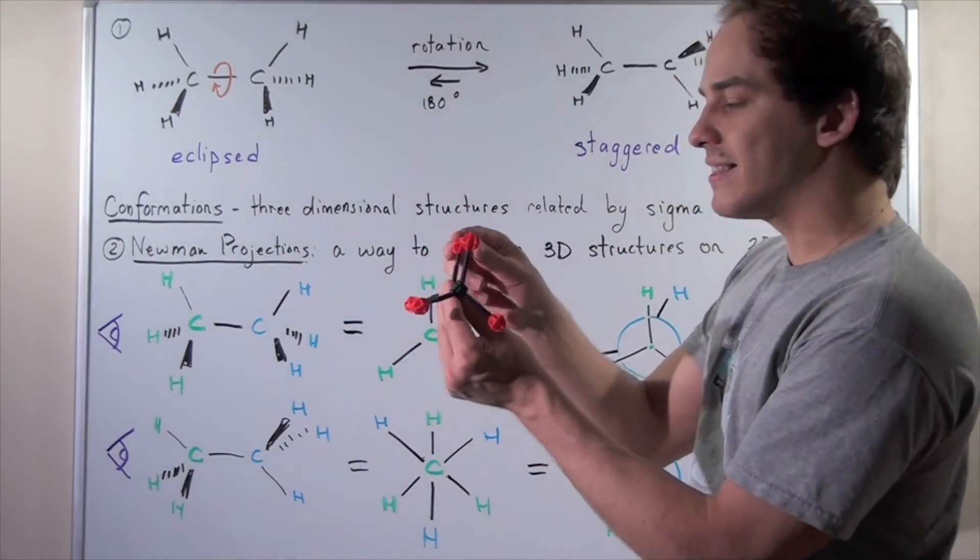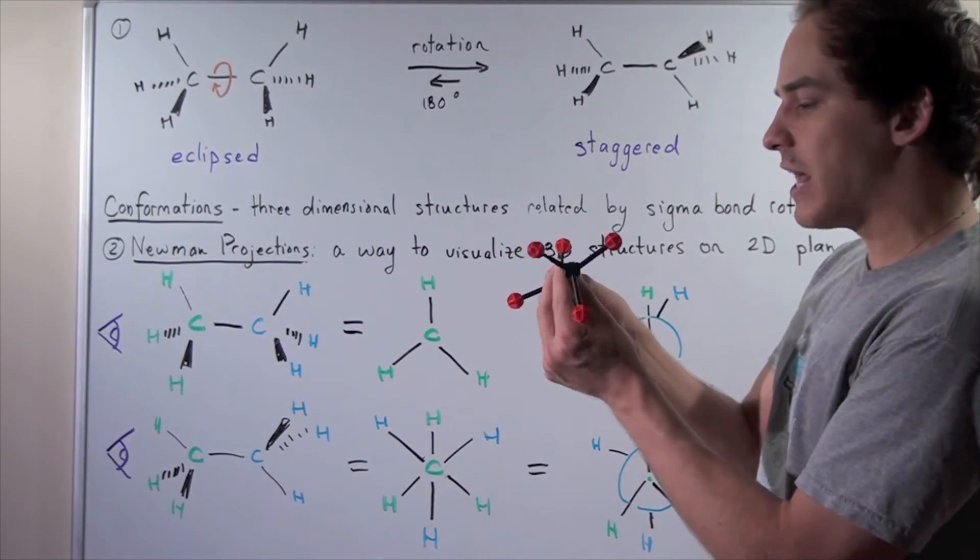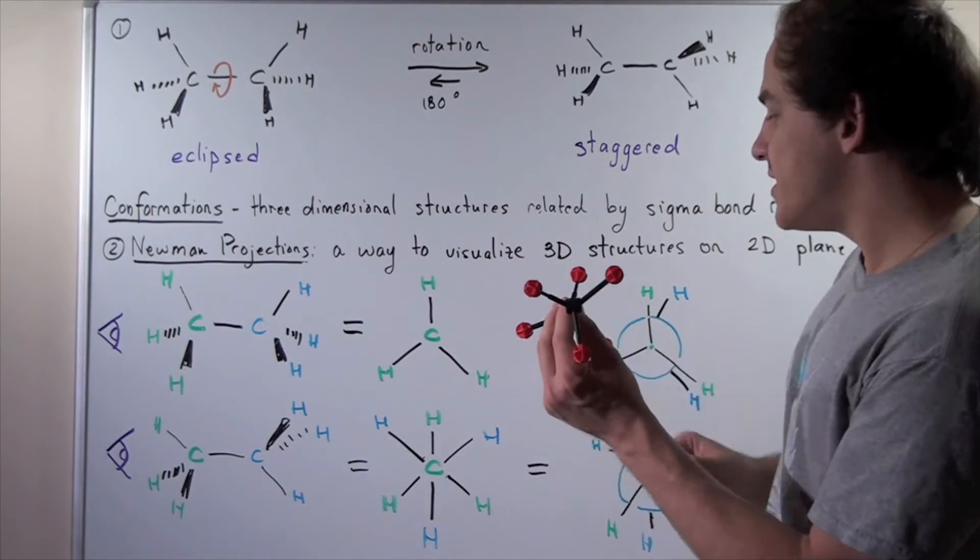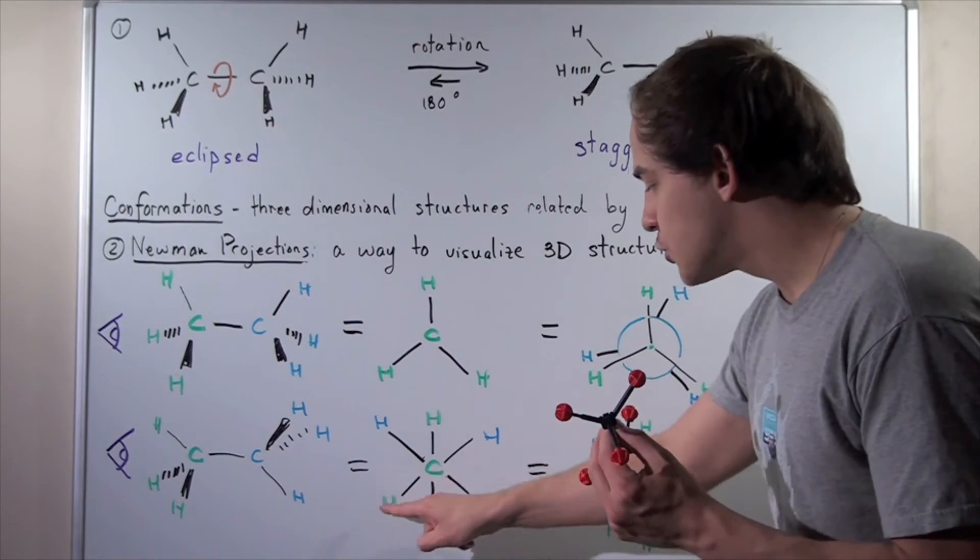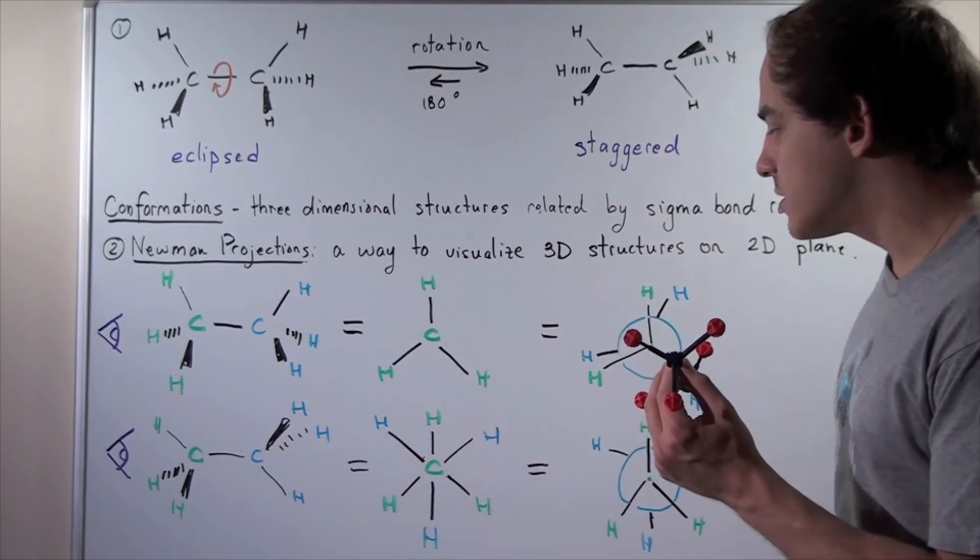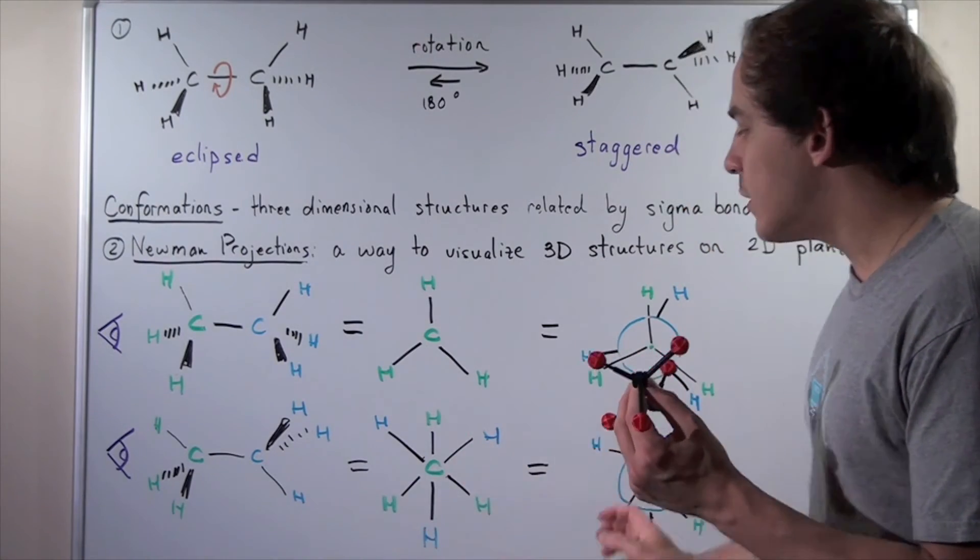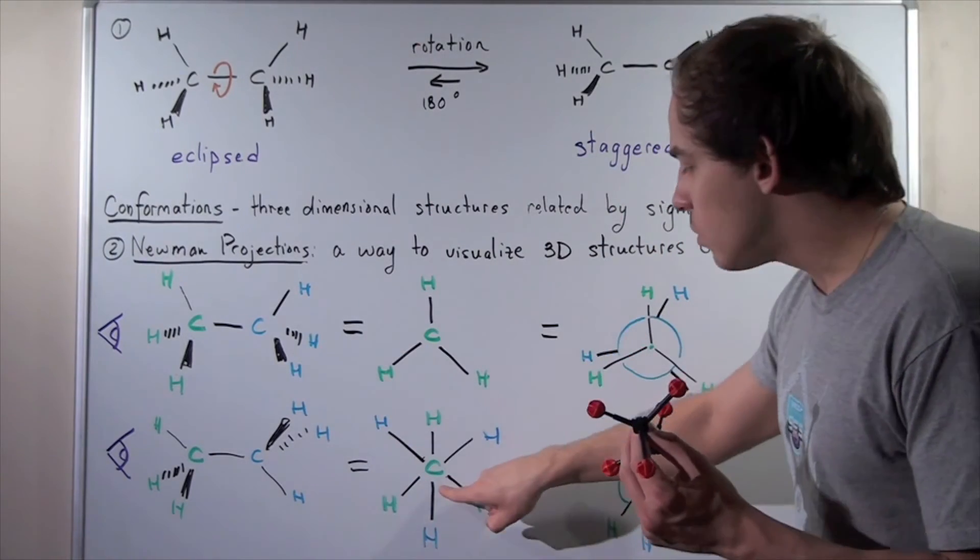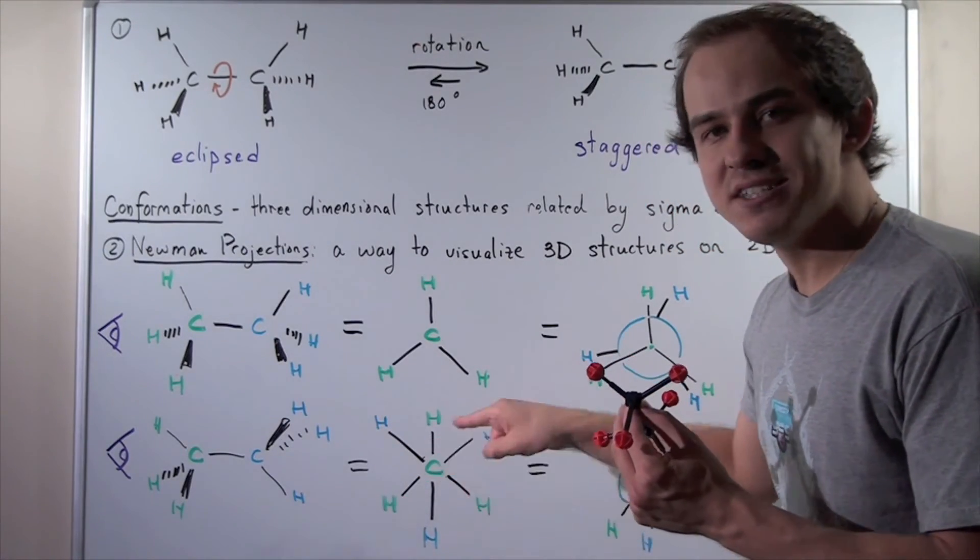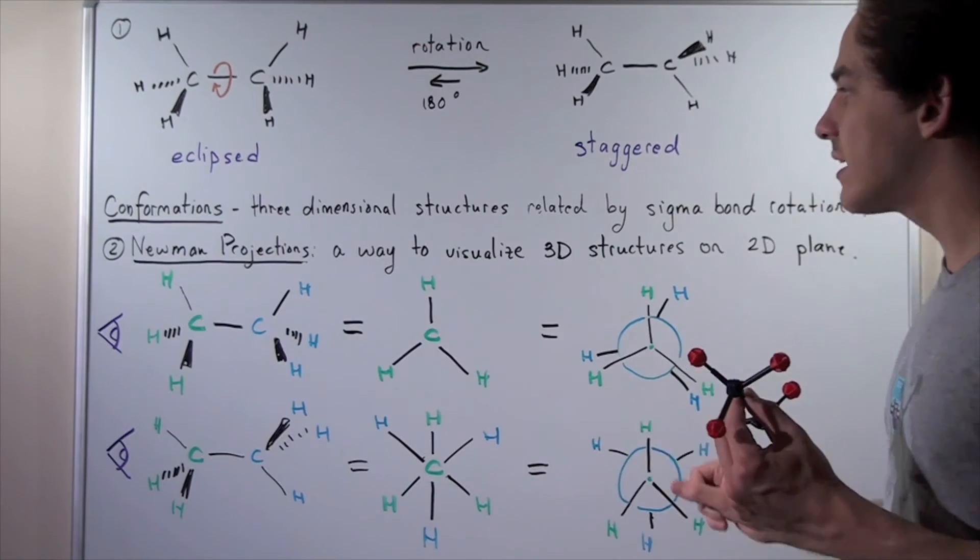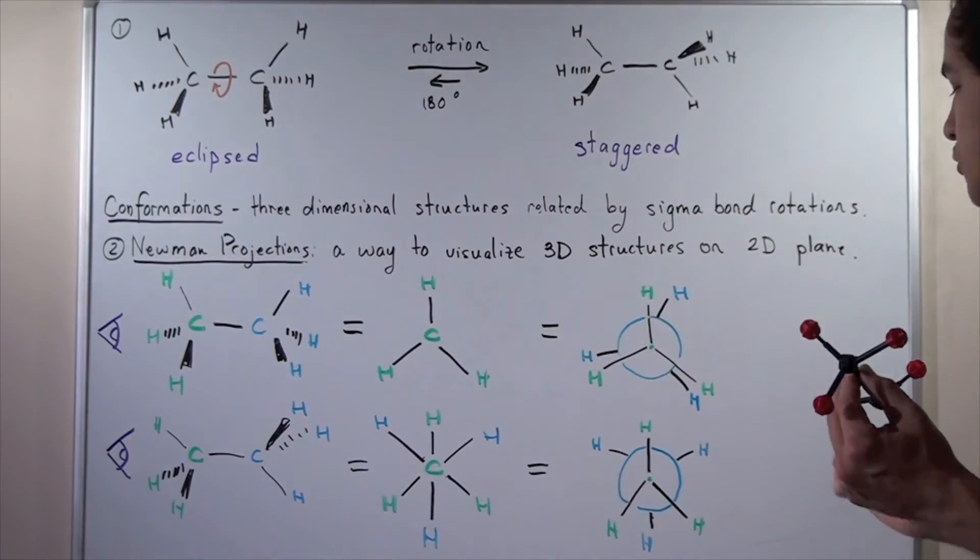If we look at the staggered conformation, which looks like this, what we see is this picture here. We have the carbon atom and it's attached to three C-H bonds, so three hydrogens. Then we have the back carbon that's also attached to these three C-H bonds. In this picture, we can't really see the carbon atom, so that's exactly why we want the Newman projection.